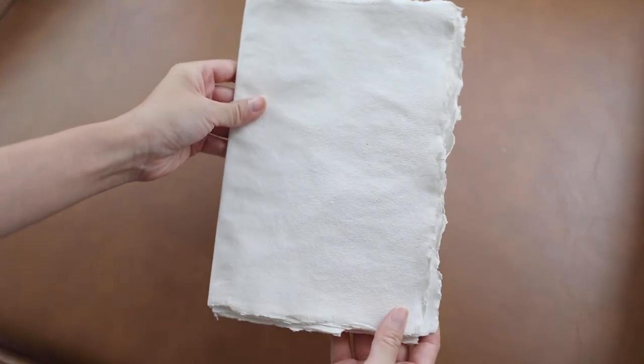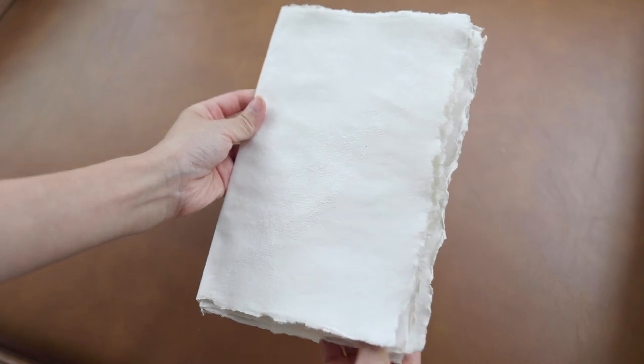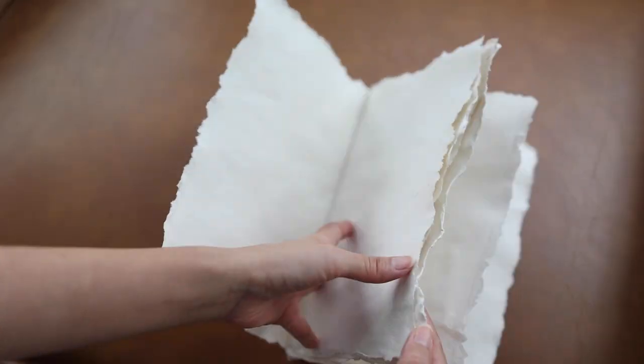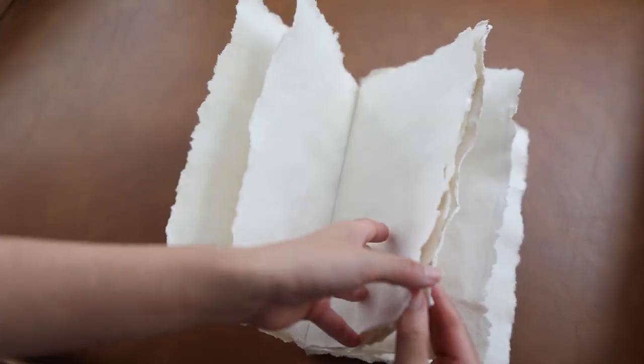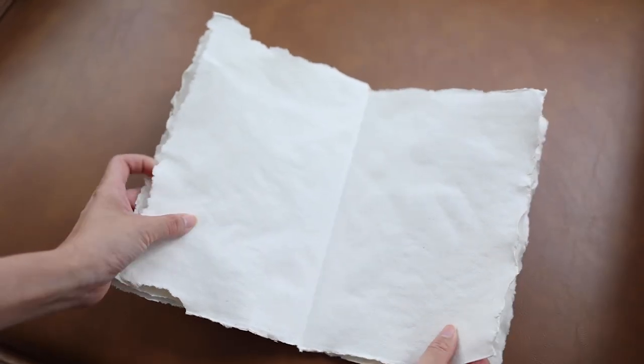So we will be folding five signatures. A signature is basically a stack of folded paper, and so in one of my signatures, I will be adding four pieces of folded paper.